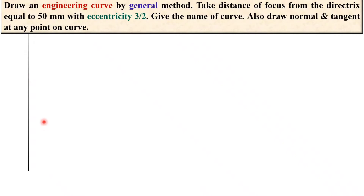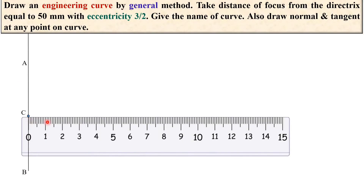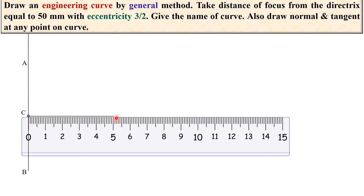First, draw the directrix line, which is always a vertical reference line. Give the name AB. Next, randomly take any one point on this directrix line — let's say it is C. Then draw the horizontal line passing through point C. The distance given is that your focus point is 50 mm from the directrix, so take 50 mm from the directrix to locate the focus point, denoted by F.